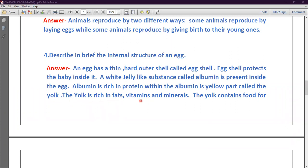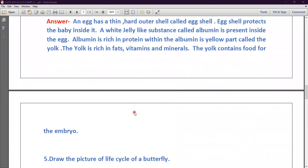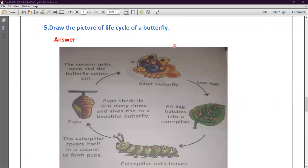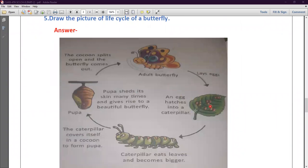Now come to next question, draw the picture of a life cycle of a butterfly. So you have to draw this picture in your notebooks. First is here adult butterfly, then adult butterfly lay egg and egg hatches into a caterpillar. Butterfly always lays eggs on leaves.